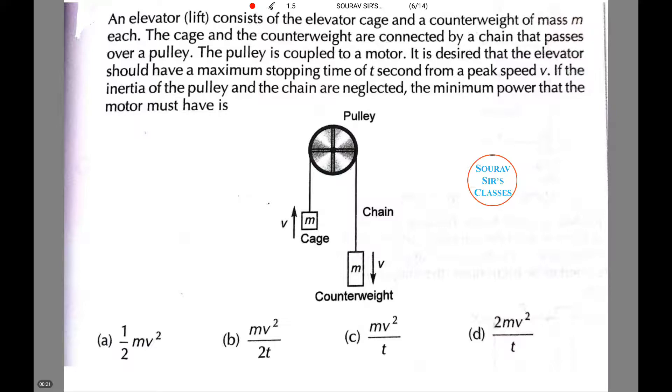Now let us look at the question which we will be solving in this particular tutorial. The question reads as: an elevator lift consists of elevator cage and a counterweight of mass m each. The cage and the counterweight are connected by a chain that passes over a pulley.